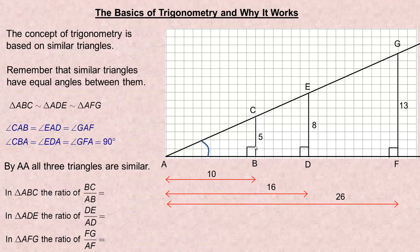In the small triangle, we are dividing the length CB by AB. We can count here that this is 5 and this is 10, and 5 divided by 10 is 0.5. For the middle triangle, the vertical side would be 8 and the length of the bottom side would be 16. Notice that 8 divided by 16 is exactly the same — it still works out to 0.5 or a half. And for the big triangle, it is 13 divided by 26, and that also works out to exactly 0.5.